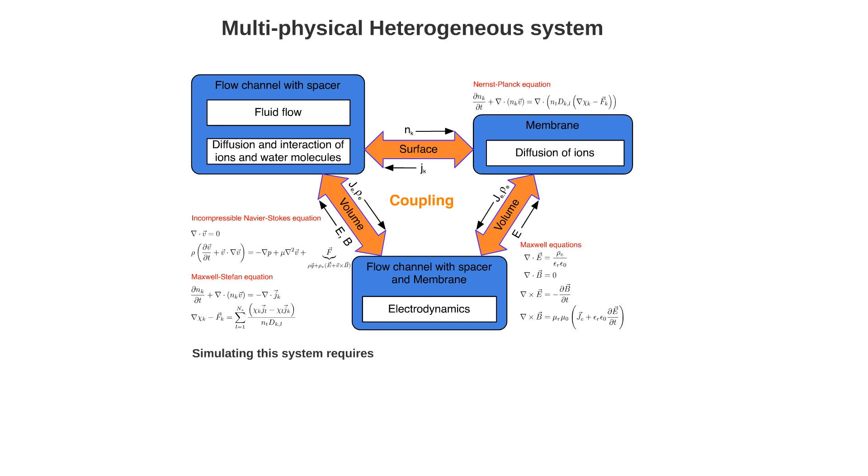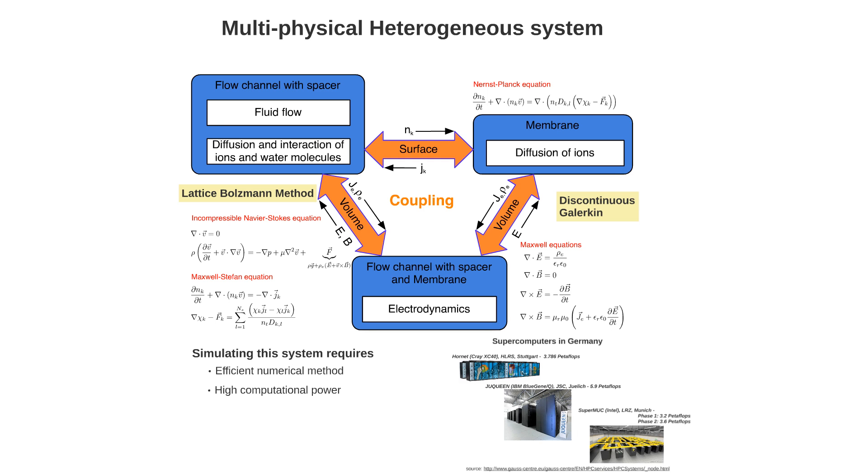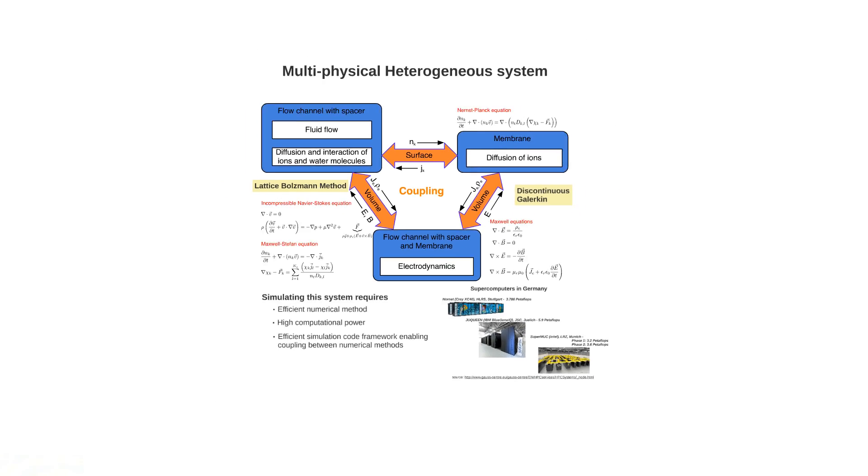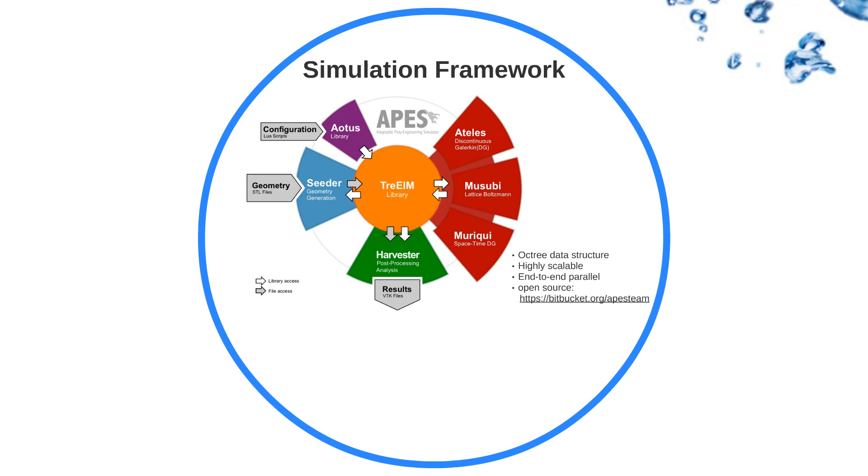Simulating this system requires efficient numerical method for which we chose lattice-Boltzmann method for flow channels with spacer and discontinuous Galerkin for membranes and electrodynamics. High computational power is required to resolve all effects. For this, supercomputers in Germany are used. Finally, the efficient simulation code framework is required to couple different numerical methods. For this, we deploy the simulation framework called APES, Adaptable Polyengineering Simulator developed by our group.